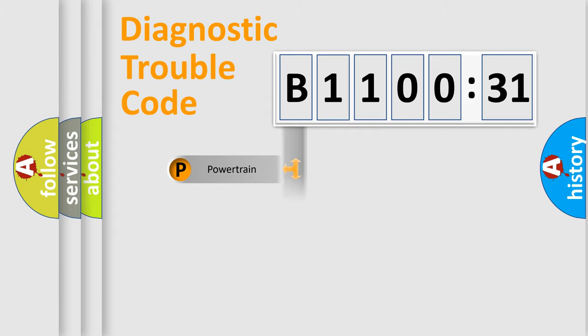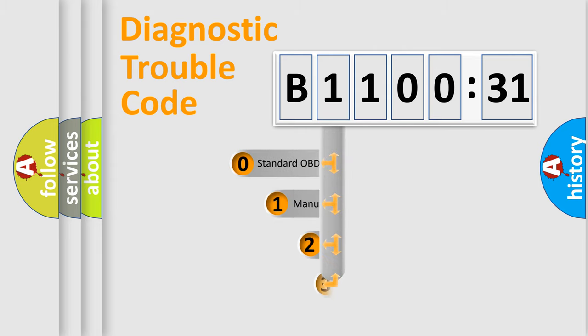Powertrain, Body, Chassis, Network. This distribution is defined in the first character code.